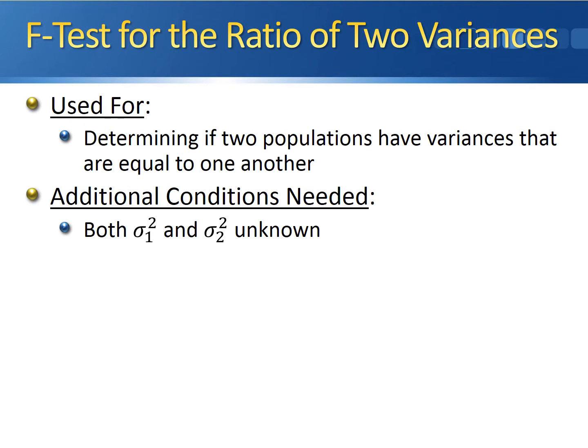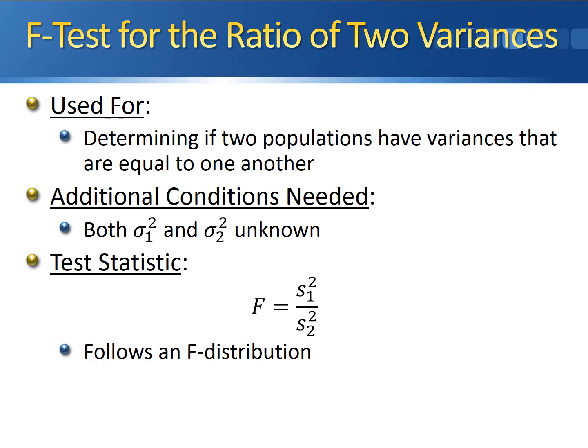The only condition we need is that both population variances are unknown. If this holds, then the test statistic for the ratio of two variances follows an F-distribution, and it's literally the ratio of the two sample variances. The test statistic is the sample variance from your first sample divided by the sample variance from your second sample — it looks at how much larger one variance is compared to the other in terms of a ratio.